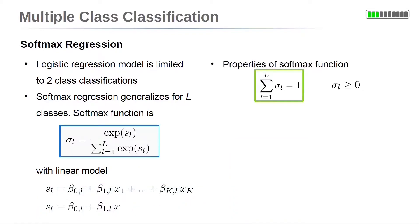The softmax function has a lot of useful properties. It outputs values for each class. The sum over all classes is equal to 1. This can be easily seen in the definition of σ_l.